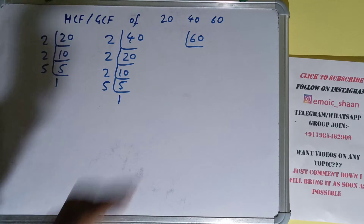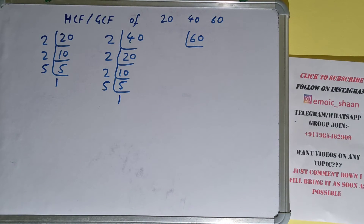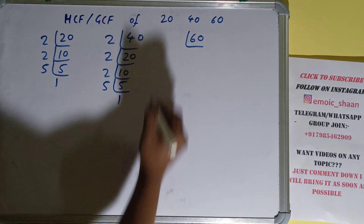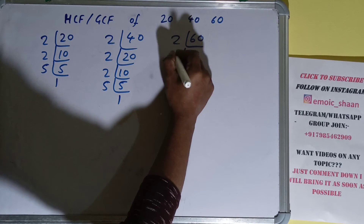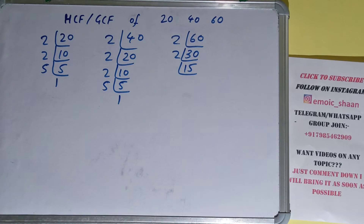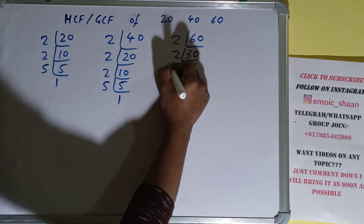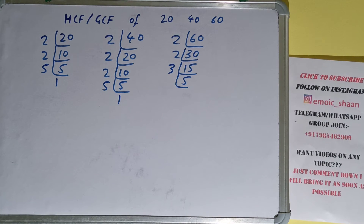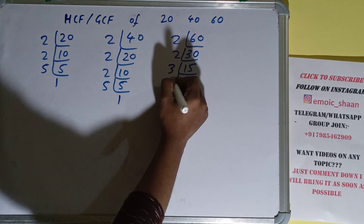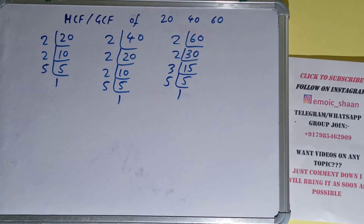Now we do the same with 60. Is 60 divisible by 2? Yes, giving us 30. 30 is again divisible by 2, giving us 15. Is 15 divisible by 2? No, so we check the next lowest prime, 3 — is 15 divisible by 3? Yes, giving us 5. 5 is a prime number, so we're done with the prime factorization step.